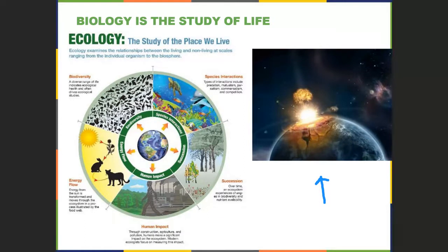There are no more dinosaurs, although there are lots of descendants of them — chickens, birds, and other reptiles are all descendants of the dinosaurs. But this image represents that mass extinction event.